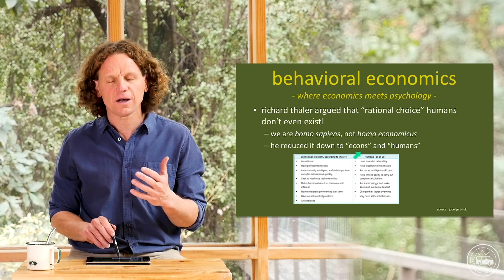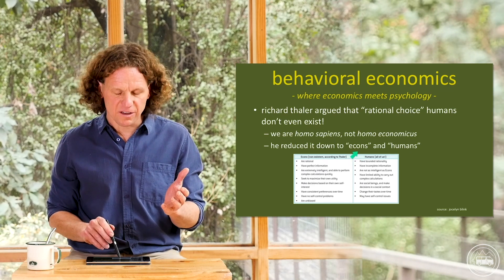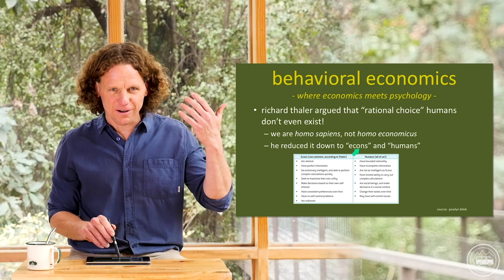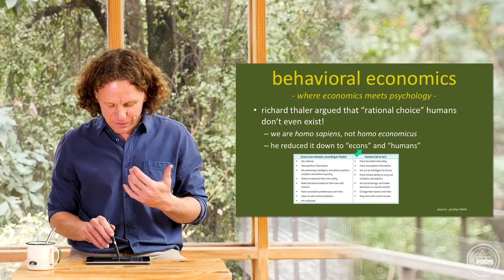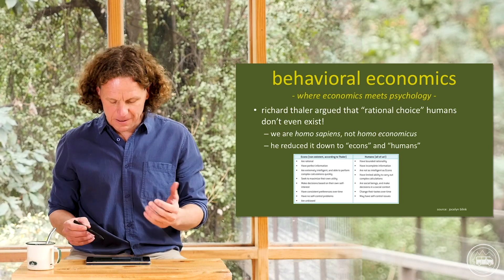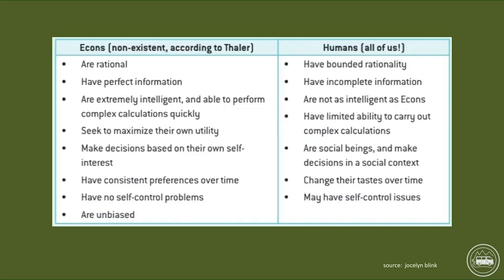Thaler created two terms to make things simple: 'econs,' which are the neoclassical homo economicus people — non-existent creatures — and then humans, which is what all of us are. If I zoom in on this chart, on the left-hand side are econs, which he says are non-existent, and on the right are humans, which is what he believes all of us are. Let's take a look at these individually.